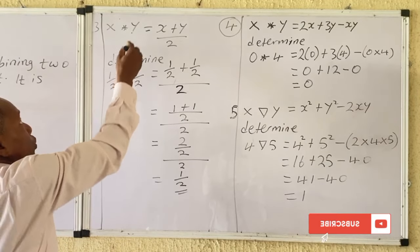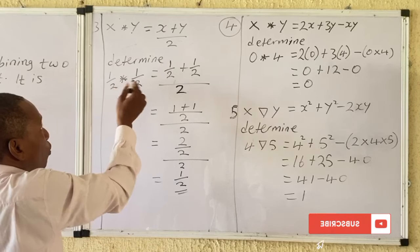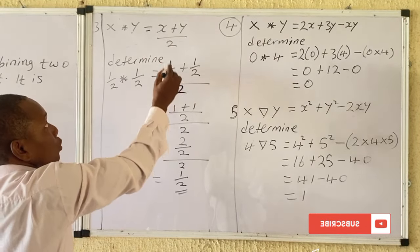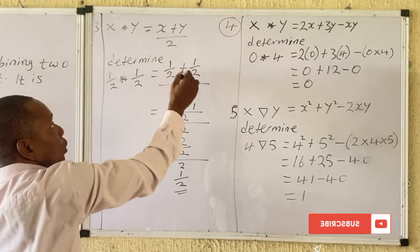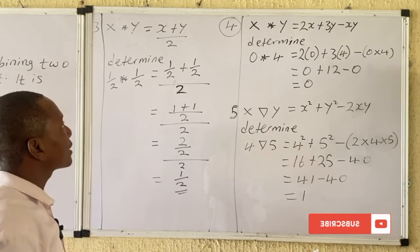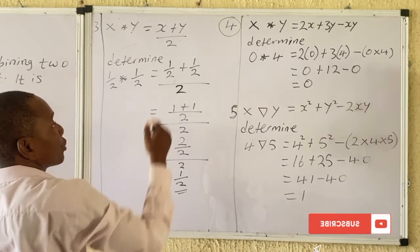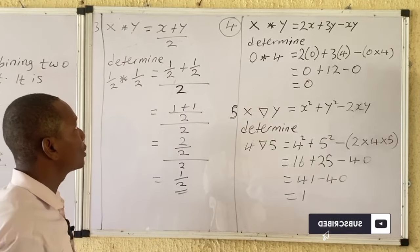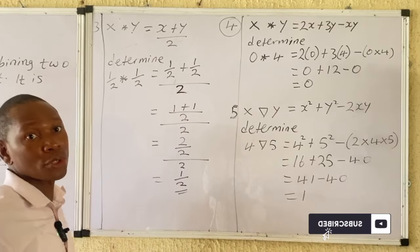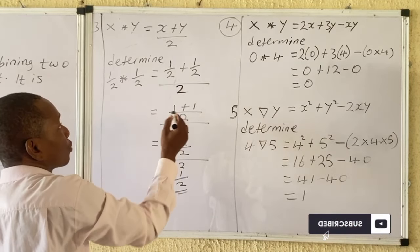Here x = 1/2 and y = 1/2. So x★y = (x + y) / 2 = (1/2 + 1/2) / 2. We solve the numerator first. To add 1/2 + 1/2, the LCM of 2 and 2 is 2, giving us (1 + 1) / 2.